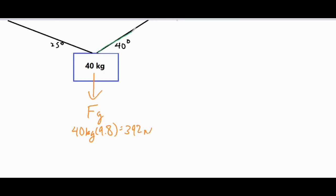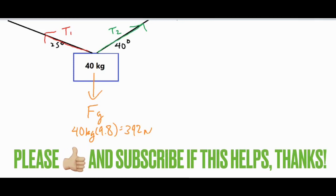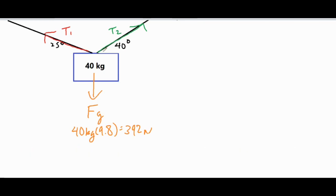We have the force of tension on one end, which I'll call T2, and another on the other side which I'll call T1. As we normally do when forces are at angles, we split them up into their x and y components: on the T2 side we have T2x and T2y, and on the T1 side we have T1x and T1y.